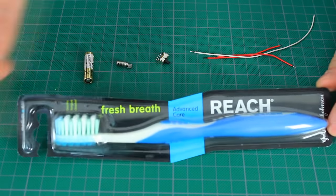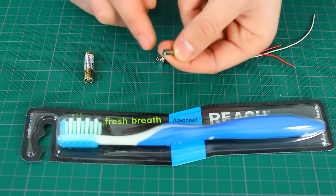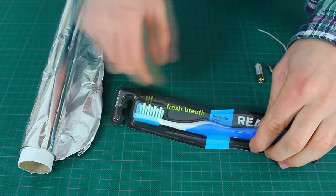To make it, we of course need one toothbrush, a small battery and a vibromotor, which you can remove from an old cell phone, a switch and some wires.